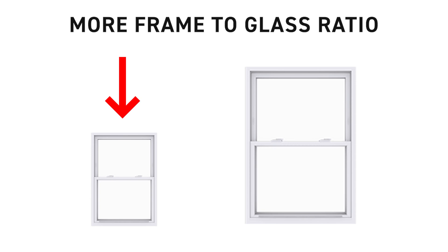That sticker is going to be printed for that exact window based on its size and glass package, the frame material, whether or not it has grids — all things that contribute to those ratings. When a contractor brings in a very small sample window, it's going to show better performance numbers than a large window because that small window has a higher frame-to-glass ratio, and frame performs better than glass when it comes to energy efficiency. So get a proposal in writing that breaks down by line item each window's U-factor, solar heat gain, etc., for that specific window.